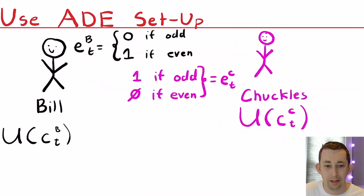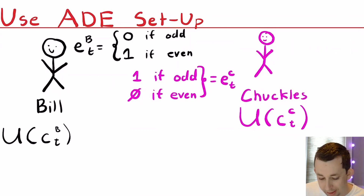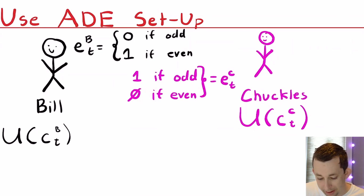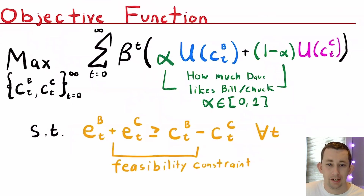To make this more concrete, we're going to use the Arrow-Debreu equilibrium setup, except Dave is now the social planner. We'll introduce Chuckles as the second person in the problem. Bill gets zero coconuts if the period is odd and one coconut if the period is even, and Chuckles is the opposite — he gets one coconut if the period is odd and zero if the period is even.